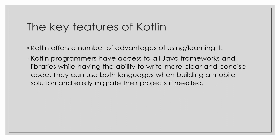The main key features of Kotlin: Kotlin offers a number of advantages. Kotlin programmers have access to all Java frameworks and libraries while having the ability to write more clear and concise code. Kotlin is like a child of Java — it has all the frameworks and libraries of Java but is a more modern language with cleaner code. Developers can use both languages while building a mobile solution and easily migrate their projects if needed. You can build a mobile app using Kotlin and Java simultaneously and mix and match as needed.